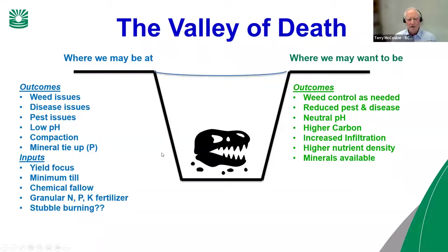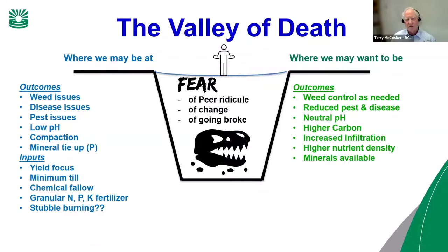There's a perception that there's a tightrope across this valley of death, and if you make one misstep the crocodiles will get you. When I analyze this, it comes down to fear. I believe there are three fears preventing people from moving forward: the biggest is fear of what peers are going to say if you step out of the norm in a district. Then there's fear of change, which is normal for all of us, and fear of going broke — also pretty normal.